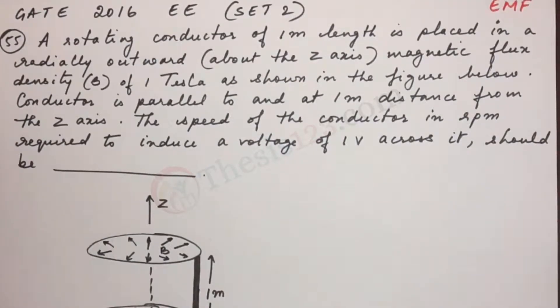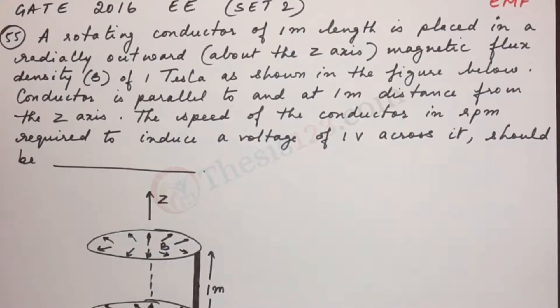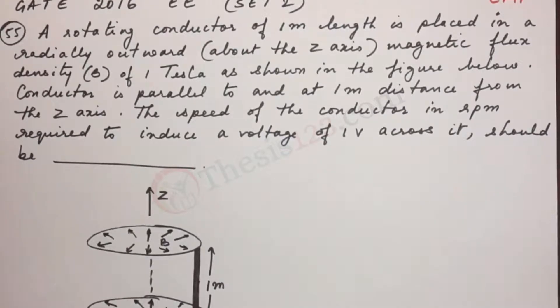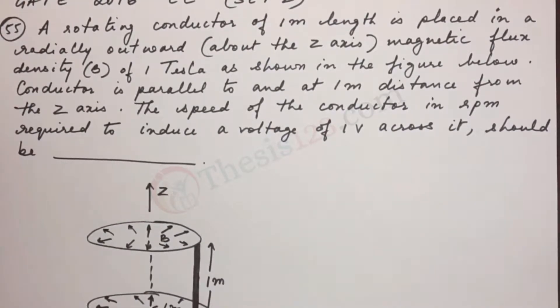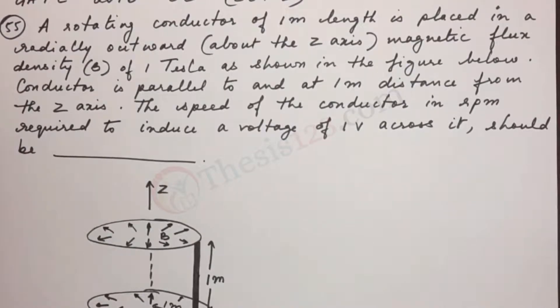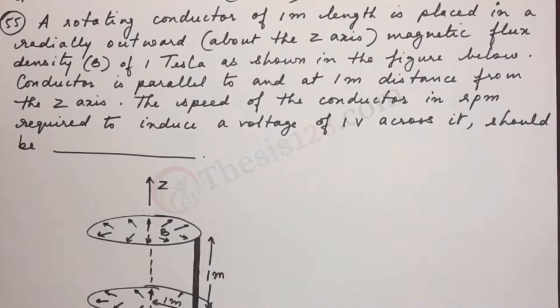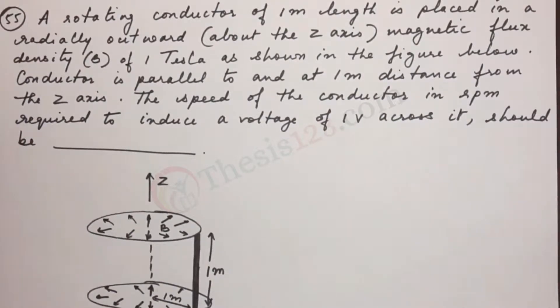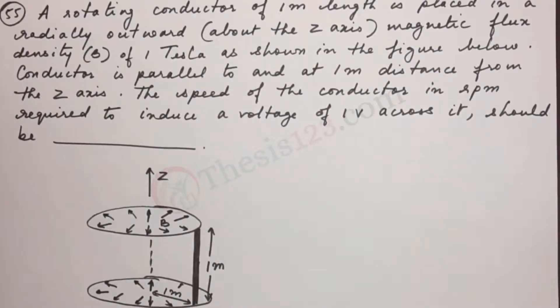Here's the next question, number 55. A rotating conductor of one meter length is placed in a radially outward, above the z-axis, magnetic flux density B of one tesla as shown in the figure below. The conductor is parallel to and at one meter distance from the z-axis. The speed of the conductor in RPM required to induce a voltage of one volt across it should be...